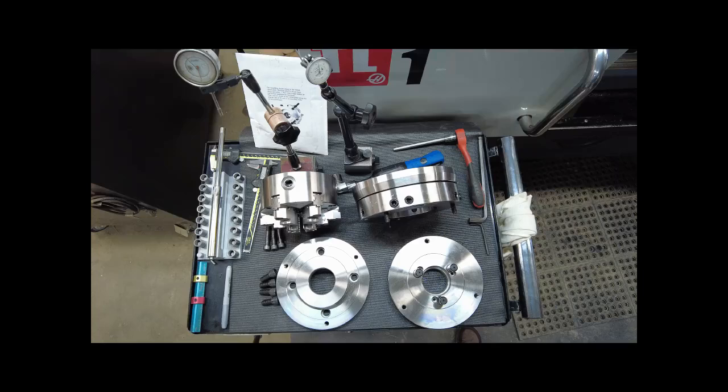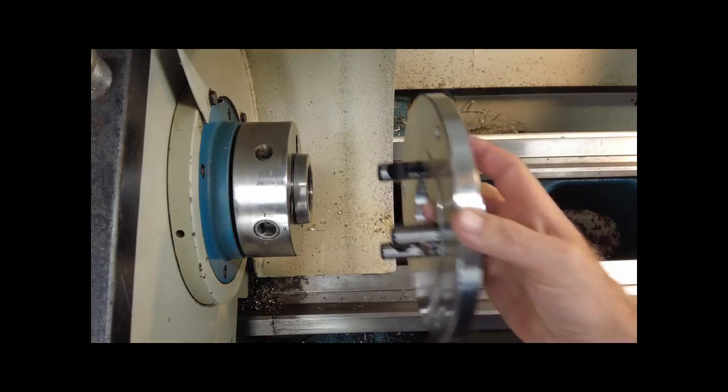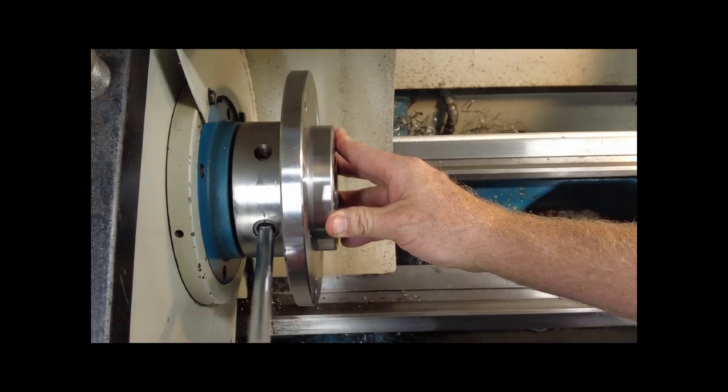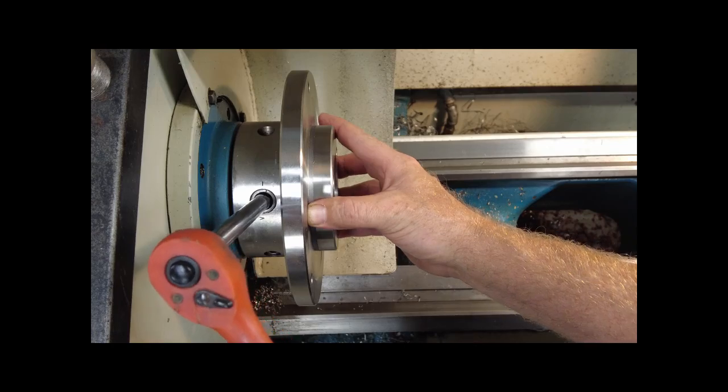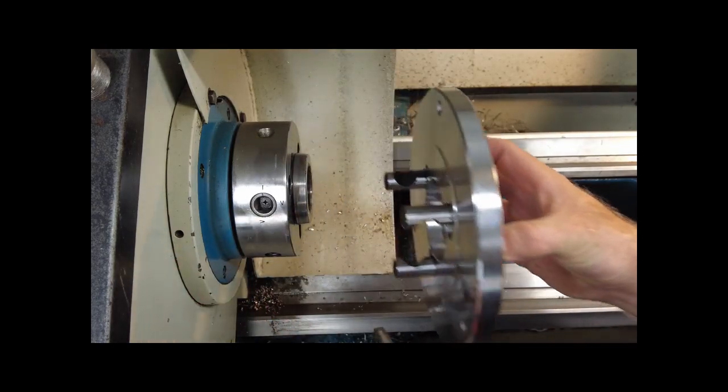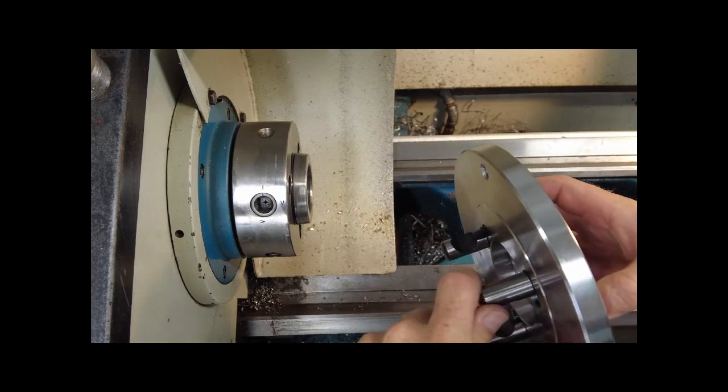Now let's go over to the lathe and make some fine adjustments to the cam lock pins. Install the spindle adapter on the lathe. Rotate the cam locks. If they don't rotate you need to back off the cam lock pin. So we will go one revolution out.